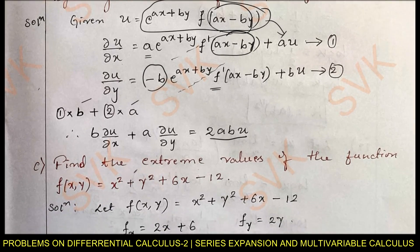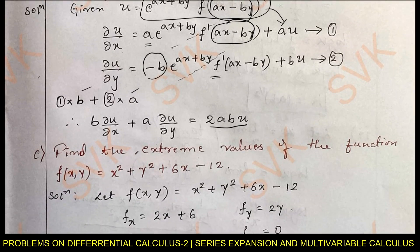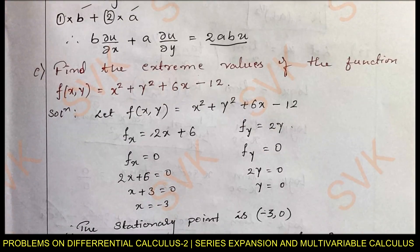Now, moving on to question 3c — note I have taken this question from set 2, so do not get confused. Find the extreme values of the function f(x, y) = x² + y² + 6x − 1. Consider the given function and differentiate: the partial derivative with respect to x is 2x + 6, and with respect to y is 2y. Setting fx = 0 and fy = 0 to find stationary points gives x = −3 and y = 0. Therefore, the stationary point is (−3, 0).